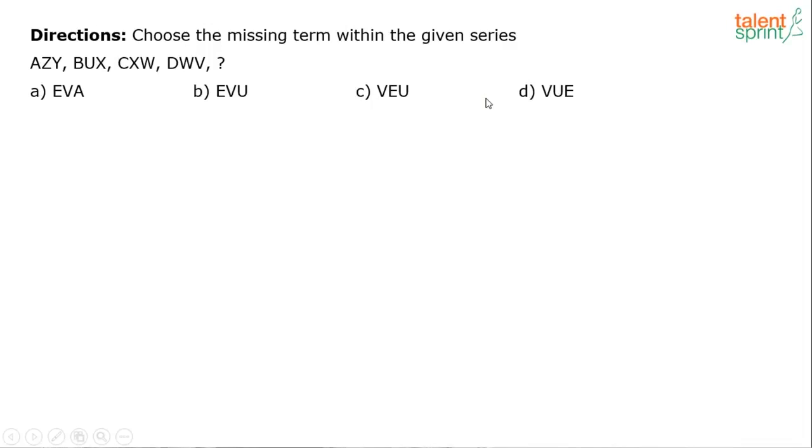Now the best way to solve such questions, we have discussed this in our video also, the video on letter series, is that you always have to eliminate the wrong answers. Try to eliminate answers which are not possible. If I go by the, try to identify the pattern here, if you look at all the first letters, A, B, C, D. So obviously the first letter in the missing term should be E.